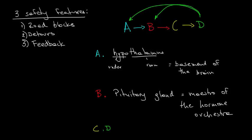And the last part in the axis, so the C part and the D part, are usually the glands where the hormones are produced themselves. So C will be the gland, and D will be the hormones that are produced from that gland.